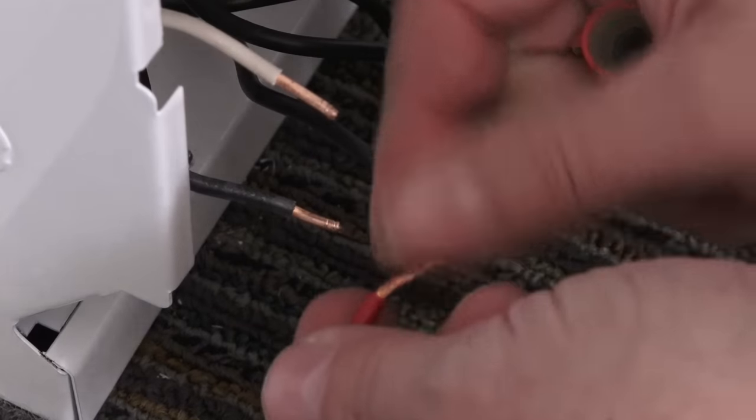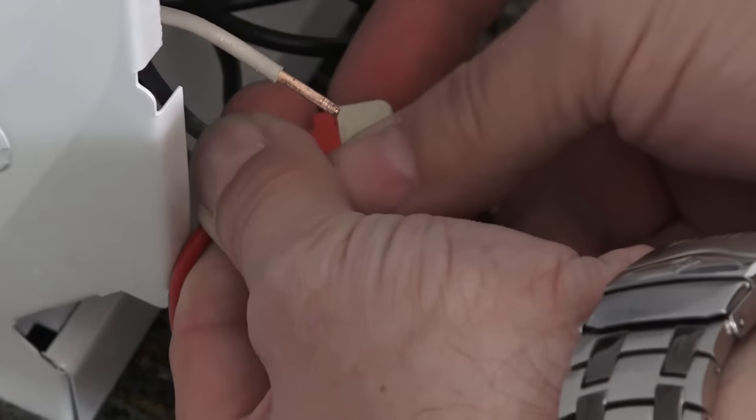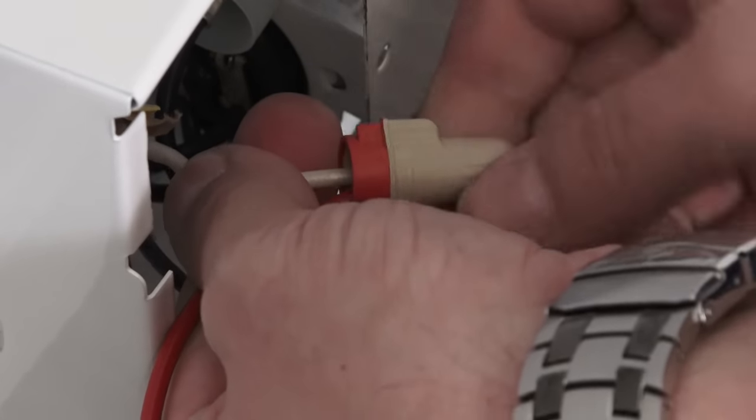Take one of the red thermostat wires and connect it up to the black wire coming from the wall. Now take the red thermostat wire and connect it up to the white wire coming out of the wall.